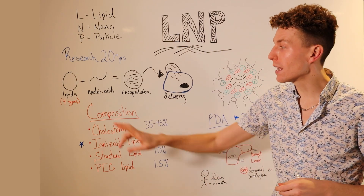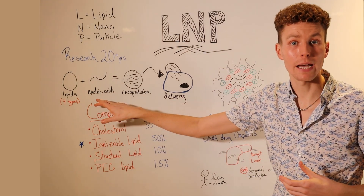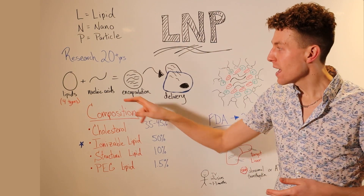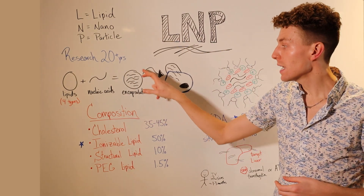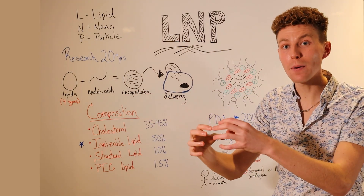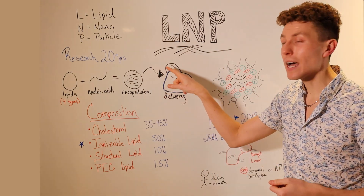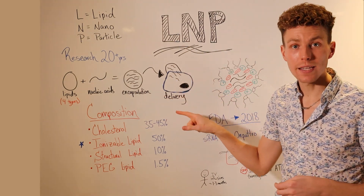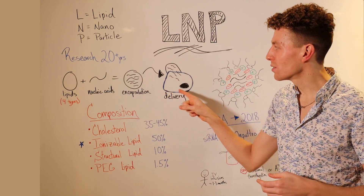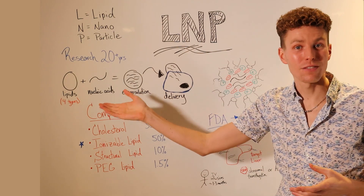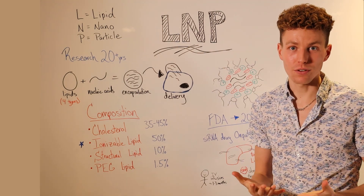Lipid nanoparticles are made of lipids, typically four types, mixed with some type of drug. In this case, I'm using an example of nucleic acids, like mRNA. It uses a microfluidics device to mix those lipids and those nucleic acids into this encapsulation system, so now you have your mRNA inside of an LNP. That LNP can then be administered to a patient, which allows for easy delivery of that drug to cells, because cells are encapsulated in a cell membrane, which is typically made of fats. Those fats are able to fuse with the fats from the lipid nanoparticle through a process called endocytosis, bringing in that drug and delivering it where it needs to go.